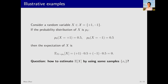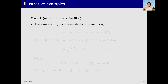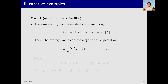Can we estimate the expectation through sampling? We consider two cases. The first case is one we are already familiar with — we discussed it when introducing the Monte Carlo method. Suppose we have some samples obtained based on p0, the true distribution of x. Then each sample's expectation will equal E[x] and its variance will equal the variance of x. In this case we can use the average value of the samples, x-bar, to approximate the expectation.